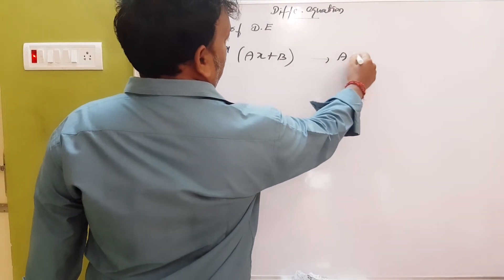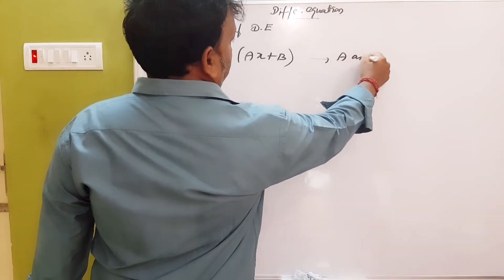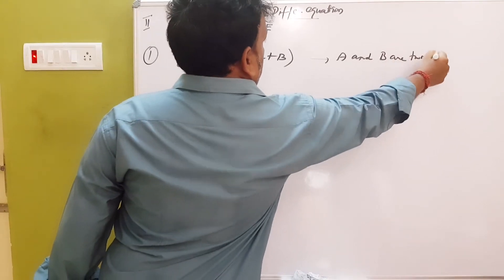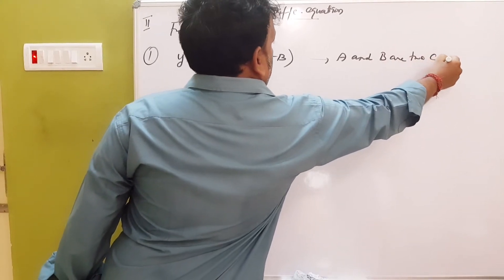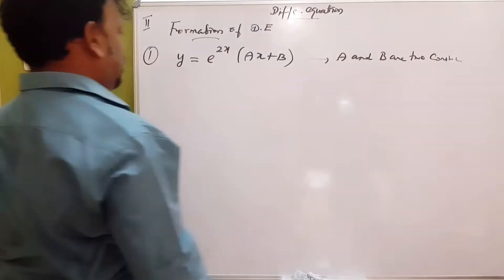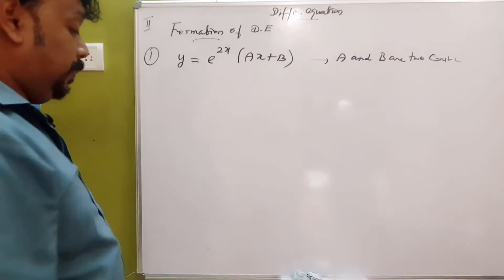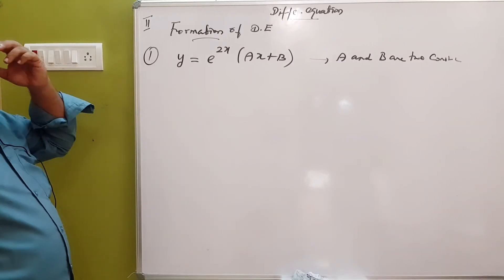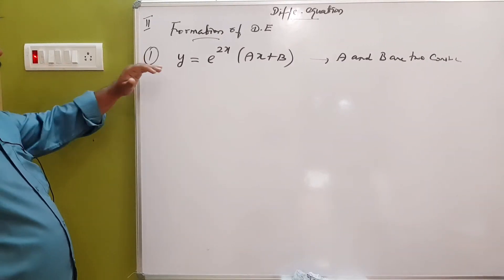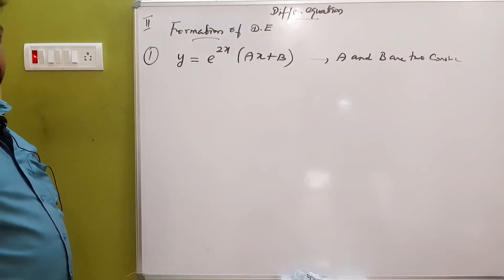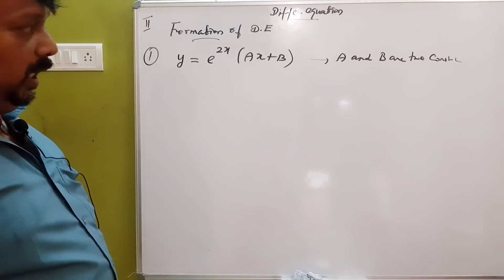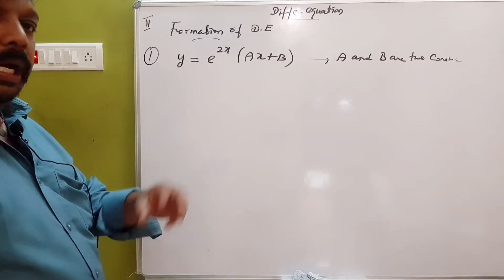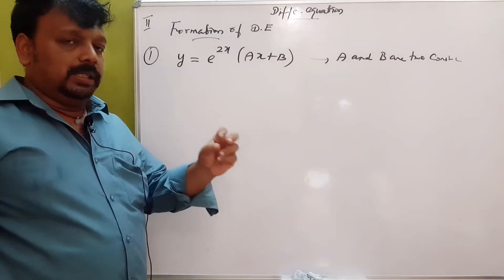A and B are two constants. You have to do two different definitions — this is not a single term. If you want to do two different definitions, you have to do a direct definition. If you want to do this, you will need to use an E power model. That's why you have to learn some tricks.